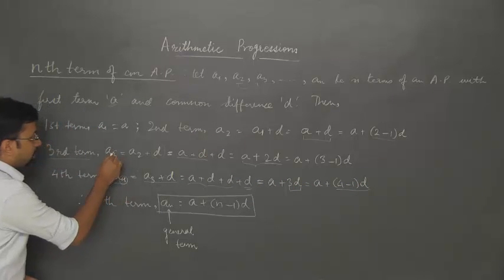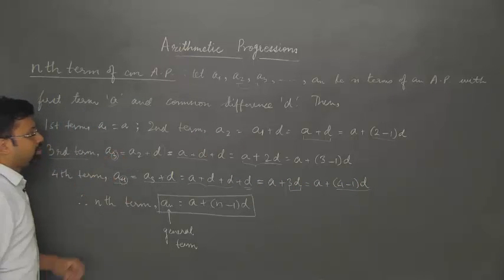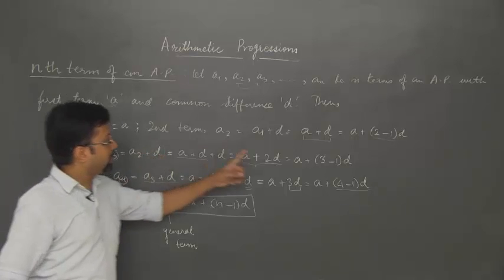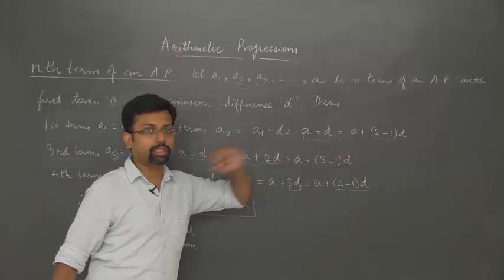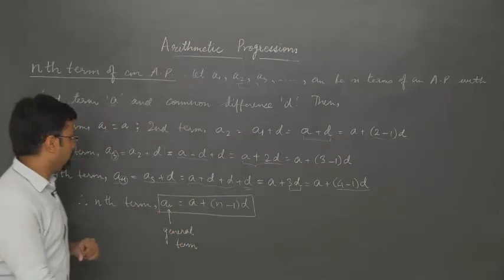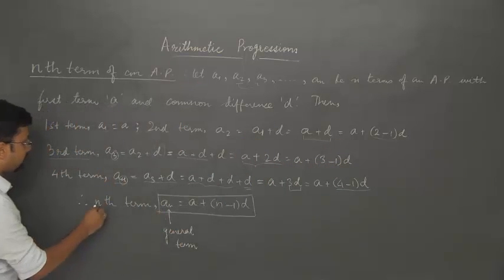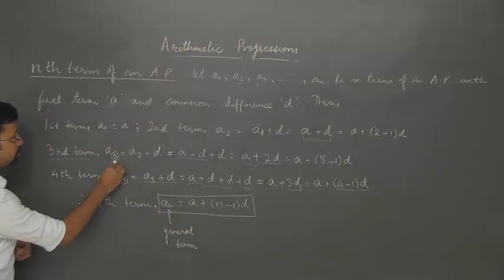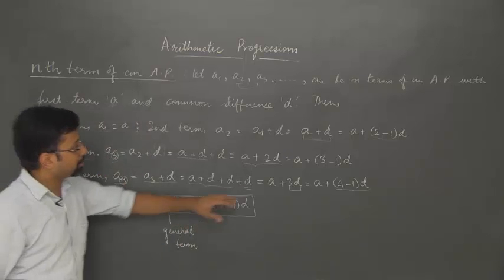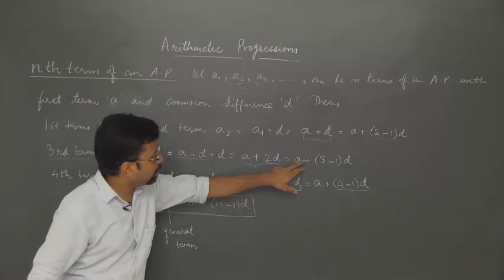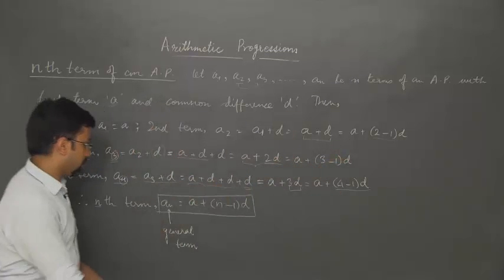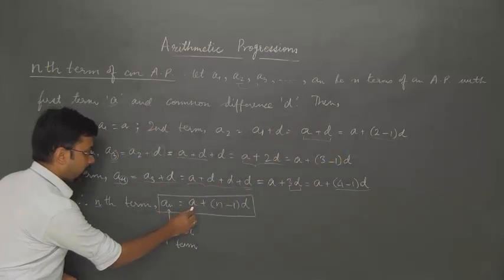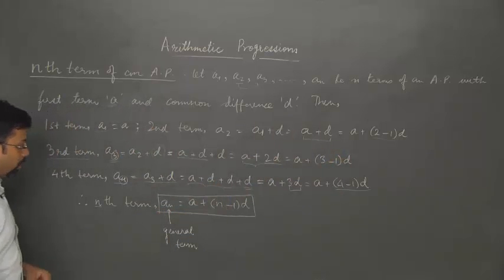When we write the third term a3, we obtain a plus (3 minus 1) times d. Similarly, if we write the nth term, we will obtain a plus (n minus 1) times d.